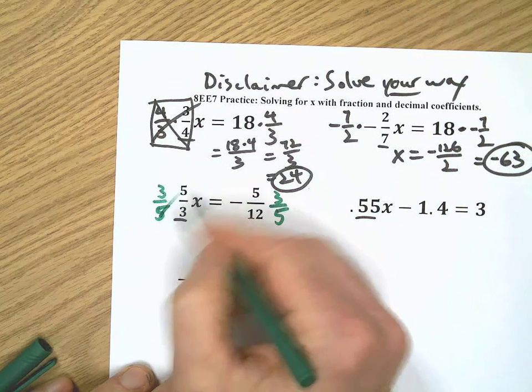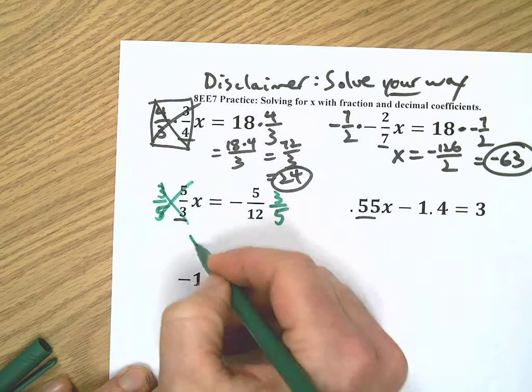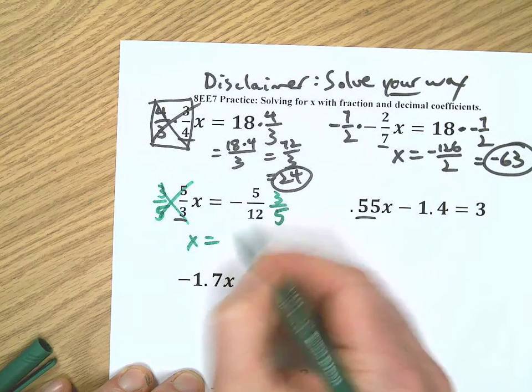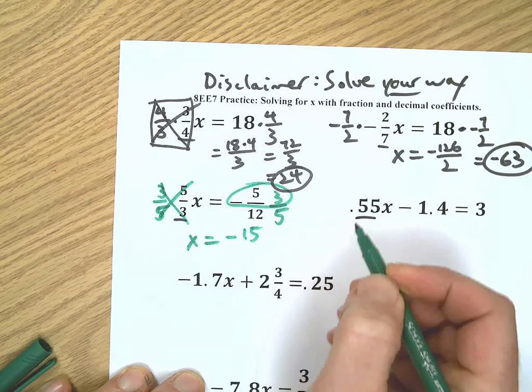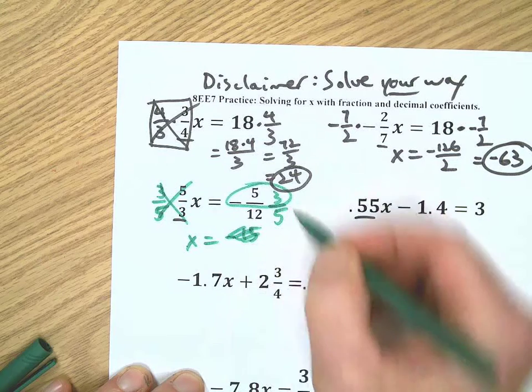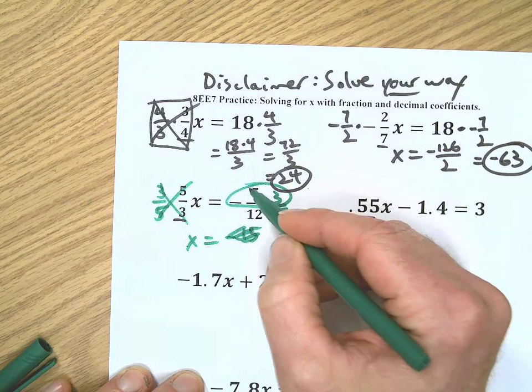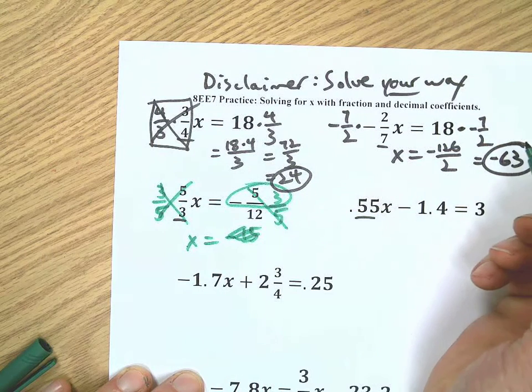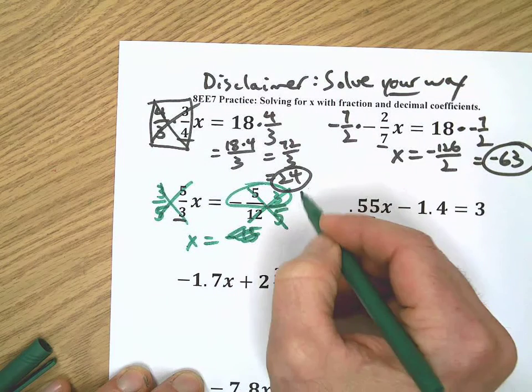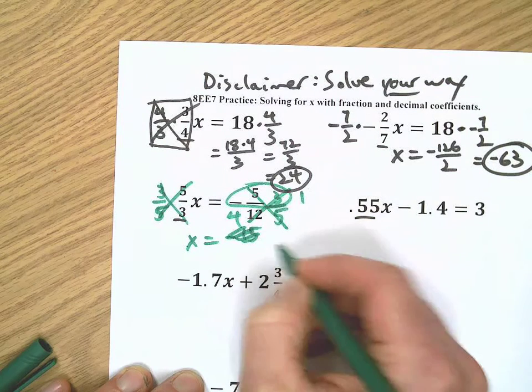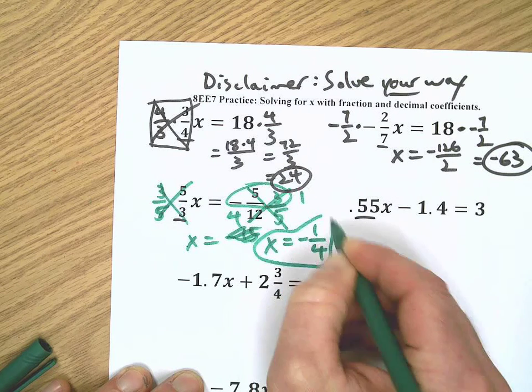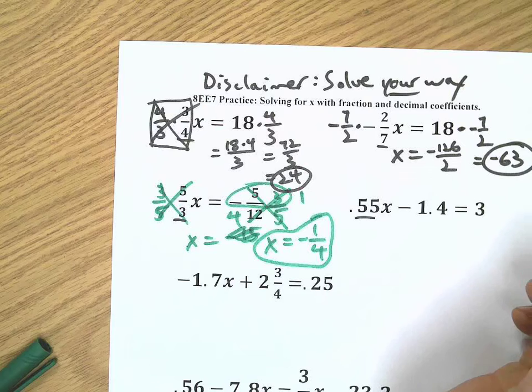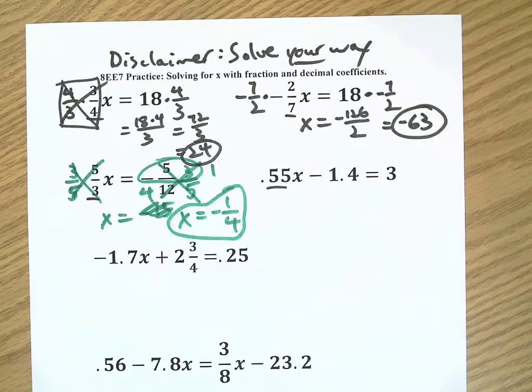We got negative 5 times 3, oh wait, look, here's an opportunity to simplify ahead of time. 5 over 5 makes 1, 3 over 12 makes 1 fourth. Wow, x equals negative 1 and 1 fourth. Simplify first, then you don't have to deal with big confusing numbers later.